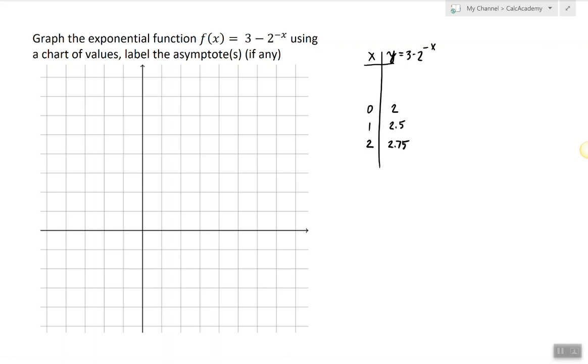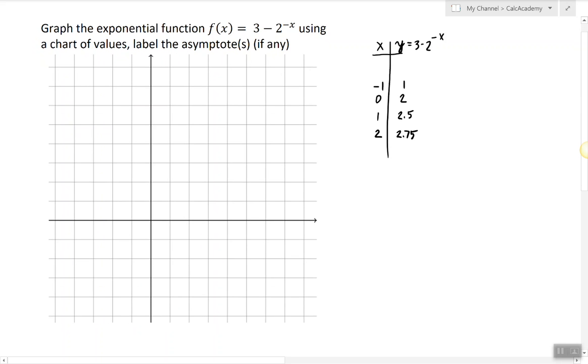Now if we go in other direction so negative 1, so 2 raised to the power of negative negative 1 is 2, 3 minus 2 is 1.